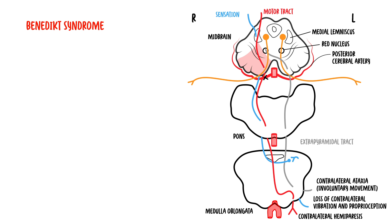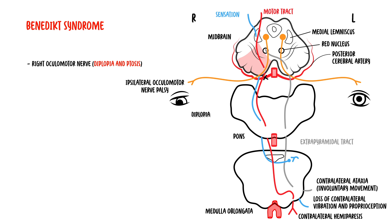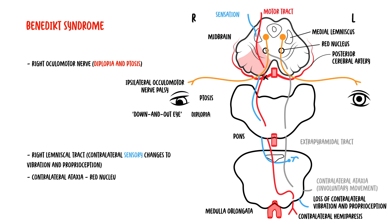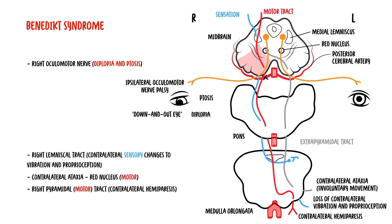The lesion is on the right side. Note that current textbooks vary considerably in the definition of the structures involved. With right-sided Benedict's syndrome, you get ipsilateral oculomotor nerve palsy causing diplopia, ptosis, and the down-and-out eye. The right medial lemniscal tract in the midbrain causes contralateral sensory changes to vibration and proprioception. Red nucleus involvement causes contralateral ataxia. The right pyramidal motor tract involvement causes contralateral hemiparesis. The superior cerebellar peduncle can also be affected, causing ipsilateral sensory ataxia.